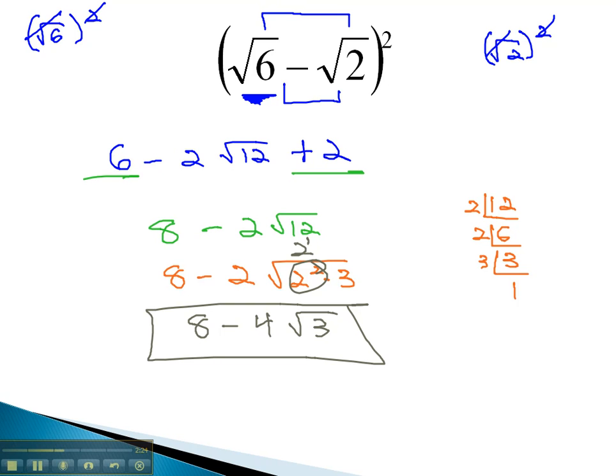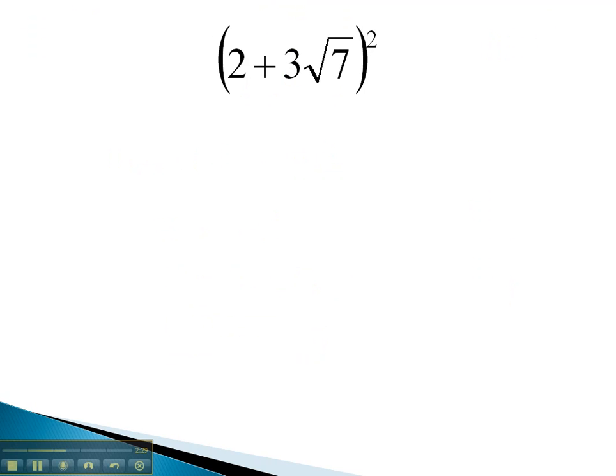Let's take a look at another problem where we have to square a binomial using this shortcut pattern. Again, we'll start by squaring the first number. 2 squared is 4. Then we take twice the product. 2 times 3 root 7 is 6 root 7. It's there twice, so 6 and 6 gives us positive 12 of these root 7's.